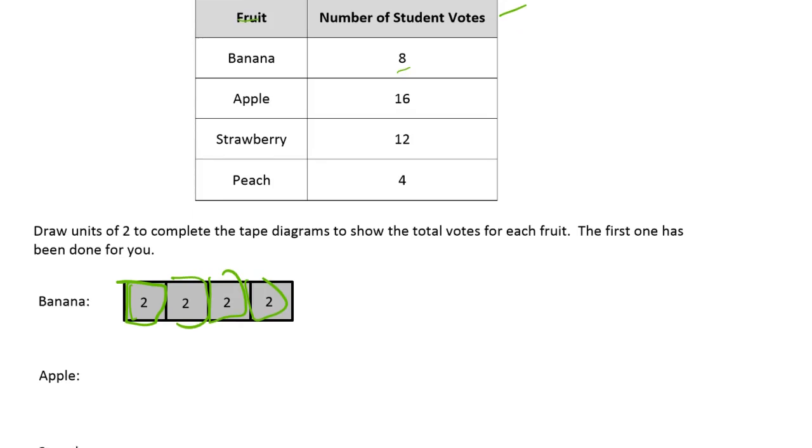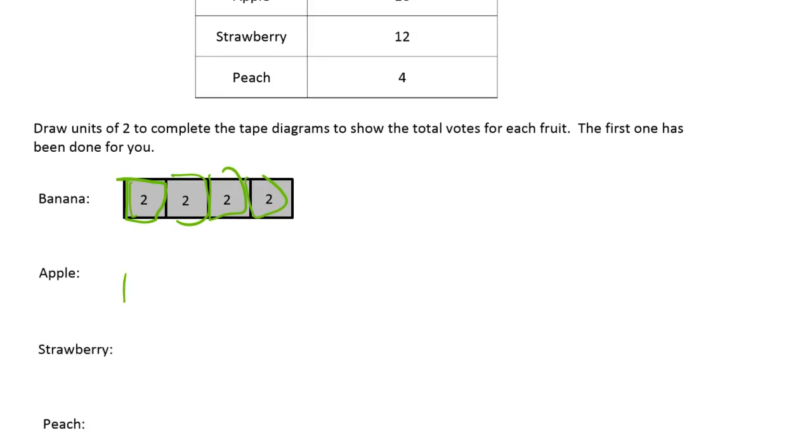Apple has 16, so we're going to try and keep our squares about the same size as those. Two, four, six, eight, ten, twelve, fourteen, sixteen. That's one way to draw a series of twos in a tape diagram.